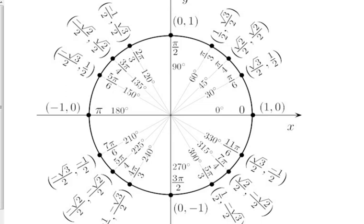A couple of things I want to point out. First of all, your coordinates: the x-coordinate gives you the cosine of the function, and the y-coordinate gives you the sine of the function. Alphabetical order — x, y, cosine, sine. C comes before S, if that helps you remember which one's which.